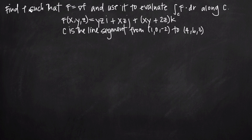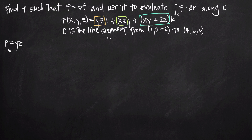The first thing we want to do is find the function f. We recognize we have vector notation with coefficients on our i, j, and k terms. We identify those coefficients and set them equal to p, q, and r: p is equal to yz, q is equal to xz, and r is equal to the quantity xy plus 2z.